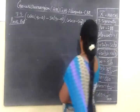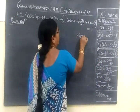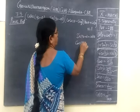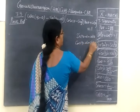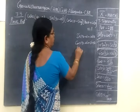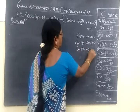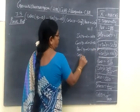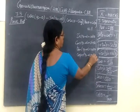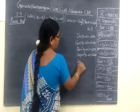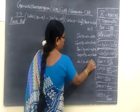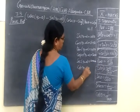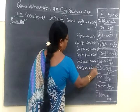So we know: sine of 90 minus theta equals cosine theta; cosine of 90 minus theta equals sine theta; sine of 90 minus theta equals cosine theta. Once again: cosine of 90 minus theta equals sine theta. Then secant of 90 minus theta equals cosecant theta. Then cotangent of 90 minus theta equals sine theta.